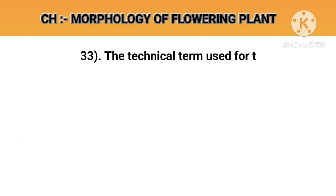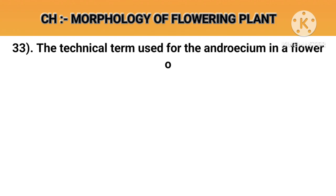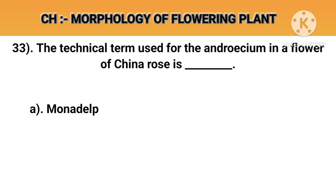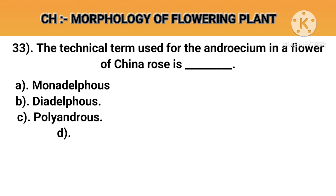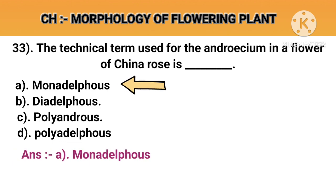Question number 33. The technical term used for the androecium in a flower of china rose is. Option A: Monadelphous. Option B: Diadelphous. Option C: Polyandrous. Option D: Polyadelphous. Answer A: Monadelphous.